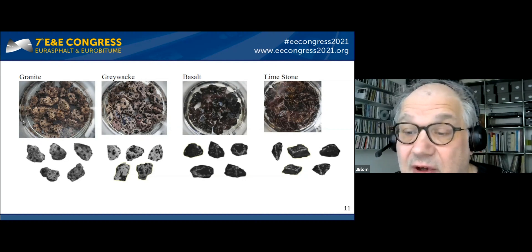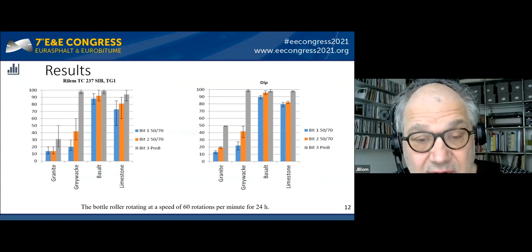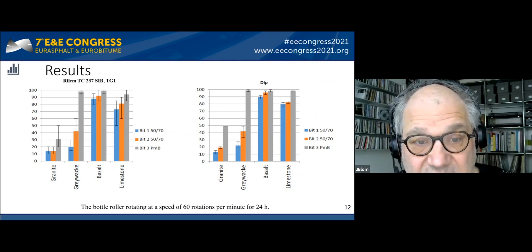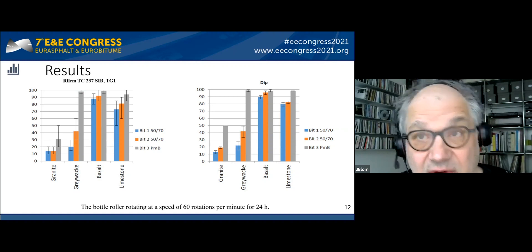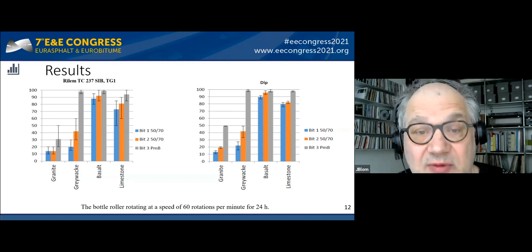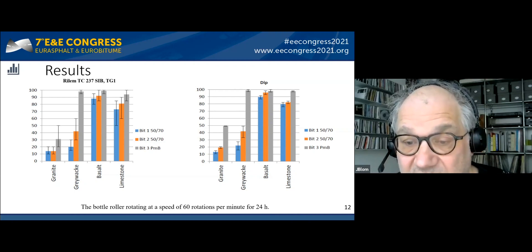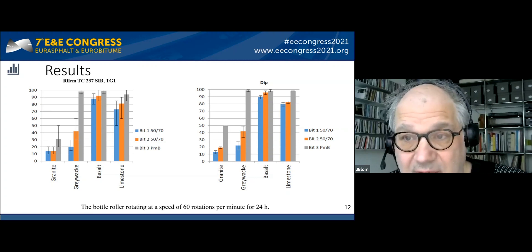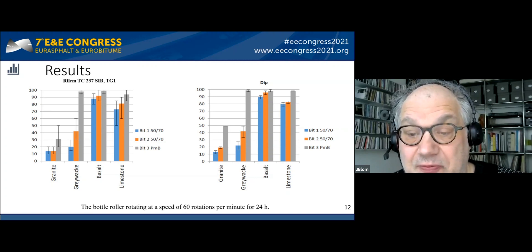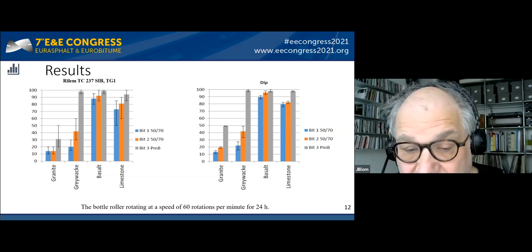To finalize: after the rolling bottle test we performed a visual inspection using the method described in the Euro code, and you can see those results alongside the results for the digital image processing method. The results are comparable, but the digital image processing method — being more objective — shows less standard deviation, meaning it is more repeatable, which was the aim of our experiment.